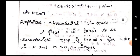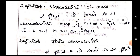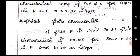Next we see the definition of characteristic 0. A field F is said to be characteristic 0 if mA = 0 for A not equal to 0 in F and m > 0 an integer. And the definition for finite characteristic: a field F is said to be of finite characteristic if mA = 0 for some A not equal to 0 in F and m > 0 an integer.